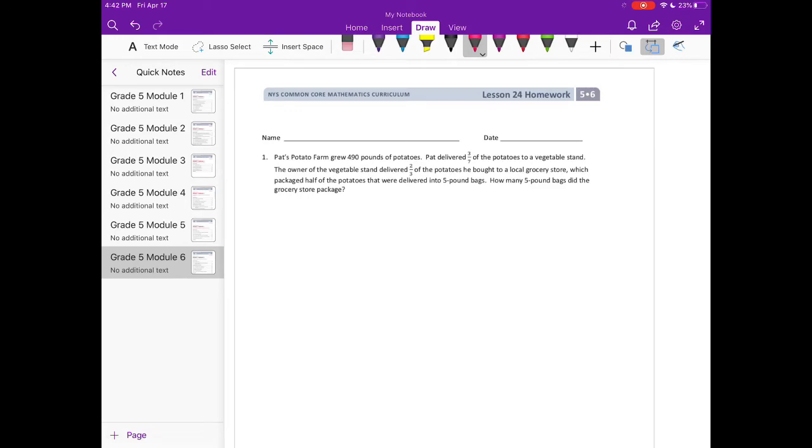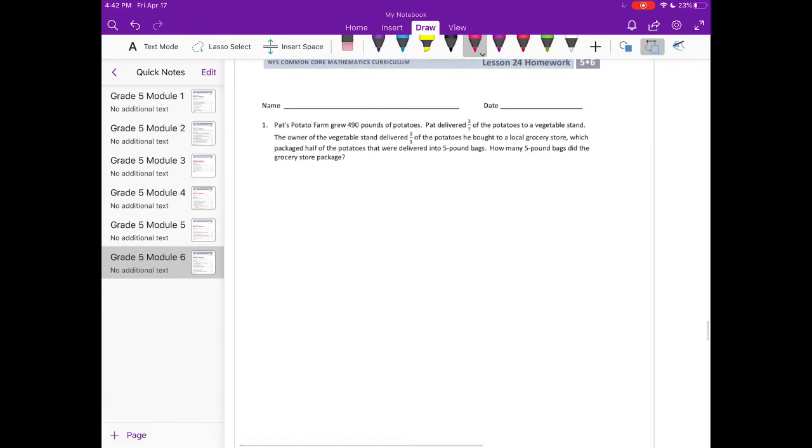Grade 5 Module 6 Lesson 24, homework number one. Pat's potato farm grew 490 pounds of potatoes. Pat delivered three-sevenths of the potatoes to a vegetable stand. The owner of the vegetable stand delivered two-thirds of the potatoes he bought to a local grocery store, which packaged half of the potatoes that were delivered into five-pound bags. How many five-pound bags did this grocery store package?